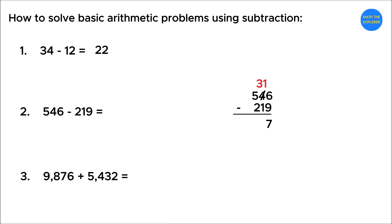Next, move to the 10's place. It's 3 minus 1 equals 2. Then, subtract the 100's place, 5 minus 2 equals 3. So, the final answer is 327.